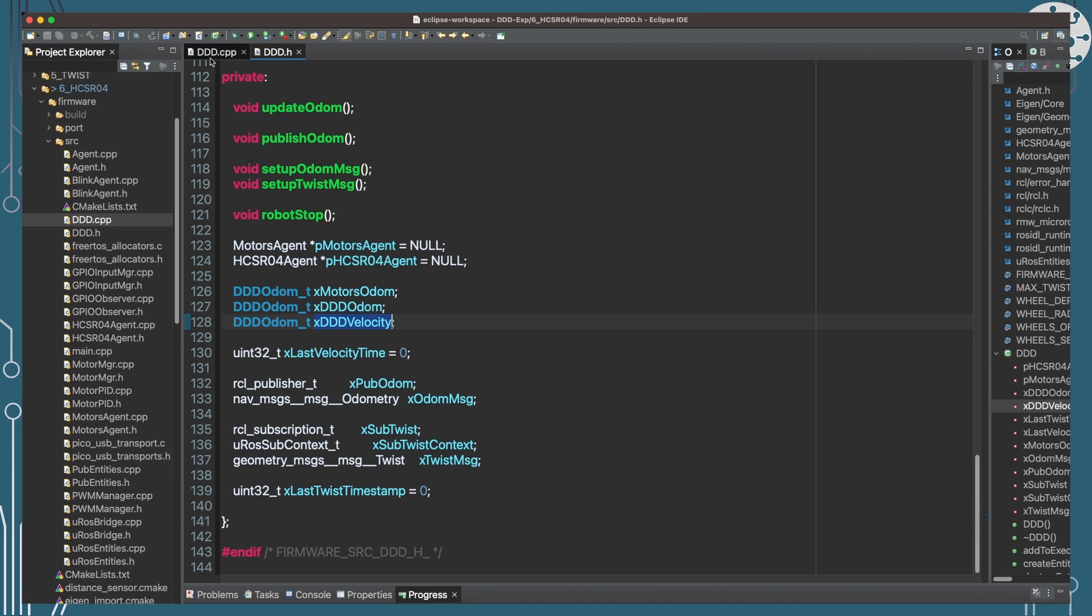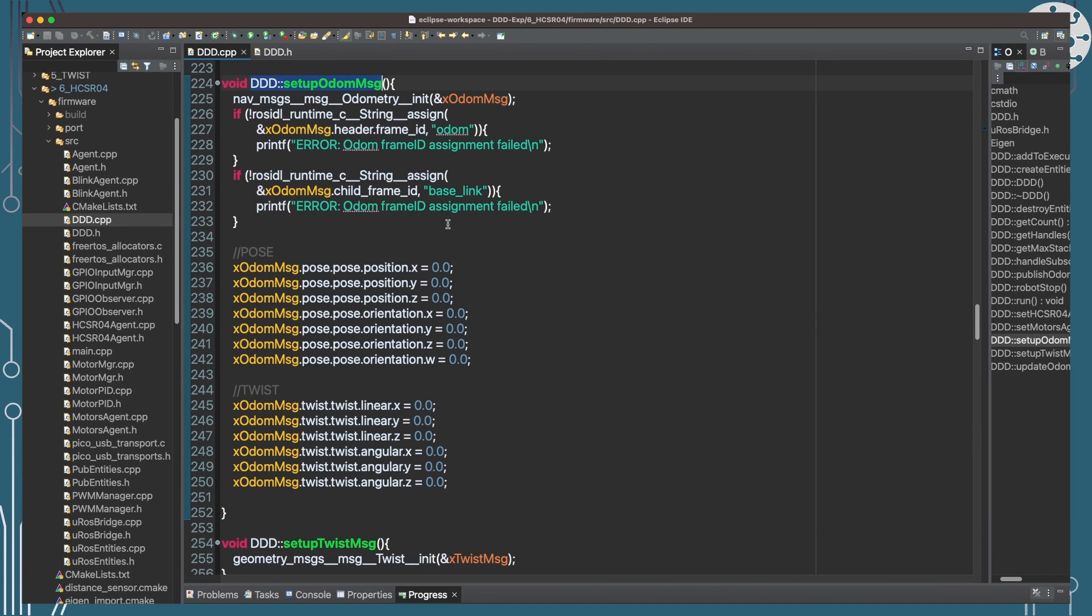So over in the C++ part of the code, we need to set up this Odometry message. That's pretty simple stuff, all of the sorts of things we've done before. We can see here that we're setting up the Odom frame, that root position that we're actually measuring our position against, and the base link, which is the position on DDD. And I'm going to just zero all the values here so that we've got a nice zero position to start from.